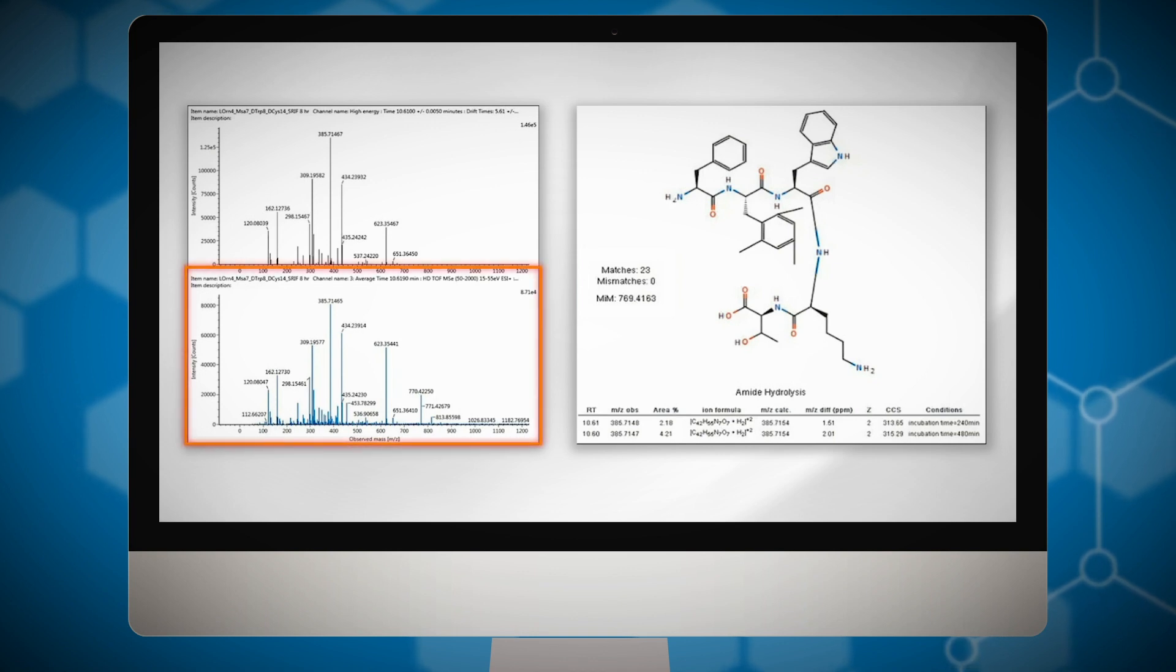The bottom panel here shows the non drift time resolved spectrum and the top is the spectrum after the application of drift time resolution. A number of potential product ions have been removed from the top spectrum because they were determined not to be precursor related.